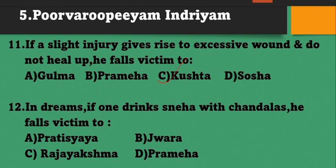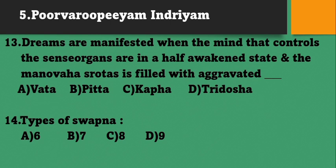In dreams, if one drinks Sneha with Chandalas, he falls victim to Prameha. Option D. Dreams are manifested when the mind that controls the sense organs is in a half-awakened state and the Manovaha Srothas is filled with aggravated Vata, Pitta, Kapha - Tridosha. So when Manovaha Srothas is filled with Tridosha, then dreams are manifested. Option B.